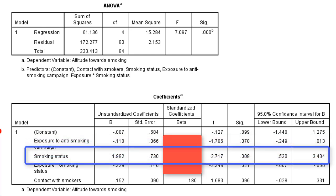Then there is smoking status — 1.98, say 2 — which is the average difference between smokers and non-smokers in their attitude towards smoking. Smokers have about 2 points higher attitude towards smoking than non-smokers; that's a substantial difference on a scale from minus 5 to plus 5. It's also statistically significant, and the confidence interval is entirely positive, ranging from 0.5 to 3.5.